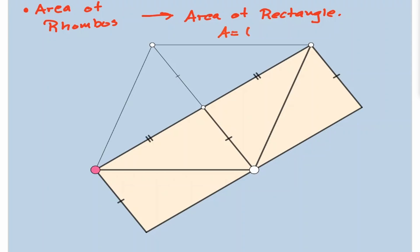And notice that the base of this rectangle that we have created, it is equal to one of the diagonals of the rhombus. And the height of this rectangle, it is half of the second diagonal in this rhombus.